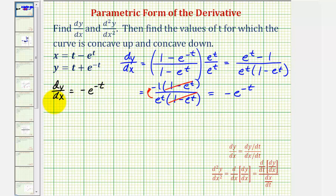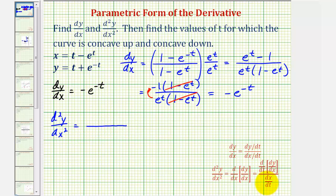Notice that dy/dx is in terms of t, so to find the second derivative of y with respect to x, we need the derivative of the first derivative with respect to t, divided by dx/dt. The denominator is dx/dt, which is one minus e to the t. To find the derivative of dy/dx with respect to t, we apply the chain rule: the derivative of negative e to the negative t is negative e to the negative t times negative one, which is positive e to the negative t.